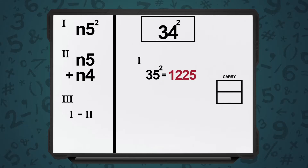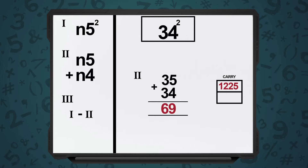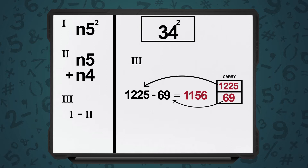Let's take one more example: 34 squared. In the n4 format, n equals 3. The corresponding n5 becomes 35. Step 1: n5 squared — 35 squared is 1225. Step 2: n5 plus n4, so 35 plus 34 equals 69. Step 3: because we are using the n4 template, Step 3 is result of Step 1 minus result of Step 2. So, 34 squared equals 1225 minus 69, and the result is 1156.